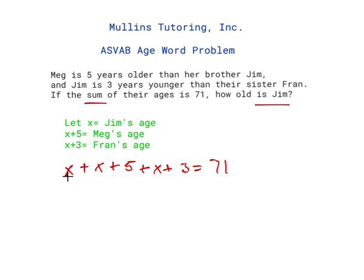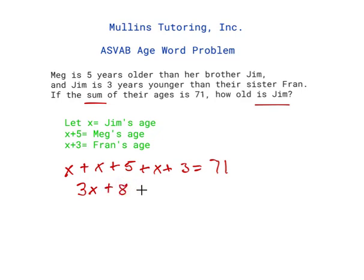The first thing we're going to do is combine our x's. I have 1, 2, 3 x's, so 3x. And 5 plus 3 is 8, and that's equal to 71.